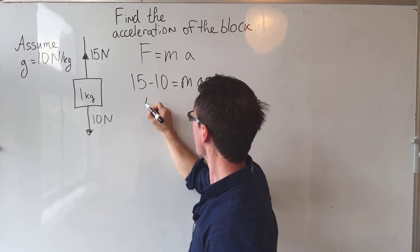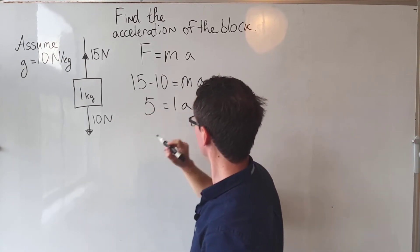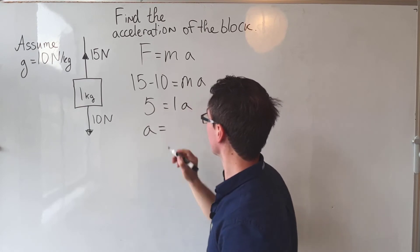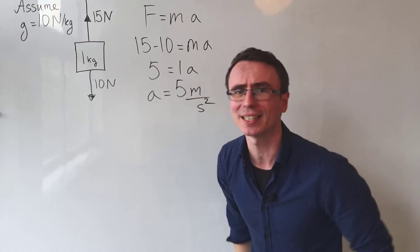5 newtons is equal to the mass, which is just one kilogram, times the acceleration. That is, the acceleration is just equal to 5 meters per second squared.